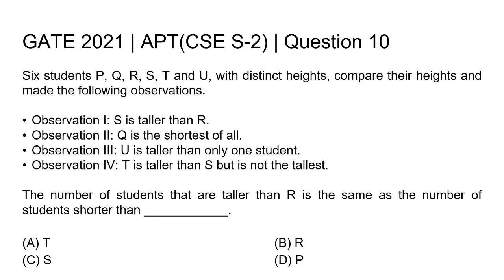So the question is the number of students that are taller than R is the same as the number of students shorter than blank.